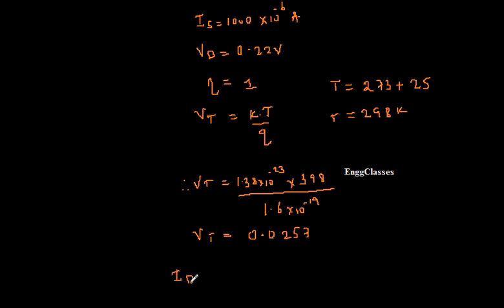Now I can put all the values into the diode expression. ID equals IS, that is 1000 into 10 to the power minus 6, multiplied with e to the power VD which is 0.22 divided by eta into VT. Eta is 1 for germanium and VT is 0.0257, minus 1.